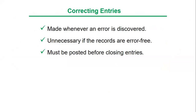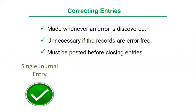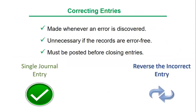There are two ways to make correcting entries. First, by making a single journal entry, so that when combined with the original incorrect entry, the error will be fixed. Or, reverse the incorrect entry and then use a second journal entry to record the transaction correctly. It's especially important to fully document a correcting entry since these items are difficult to understand after some time has passed.